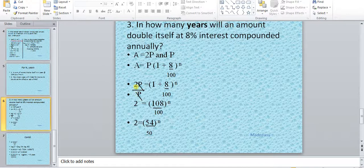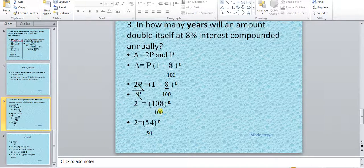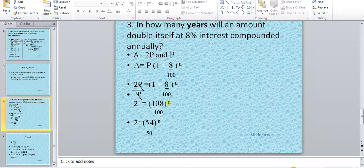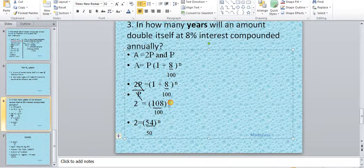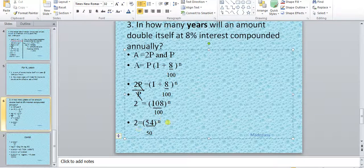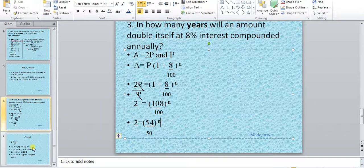Now we solve it. We get 108/100 raised to the power n. We don't know this n; we have to find it out. If we simplify, it becomes 54/50 raised to the power n.